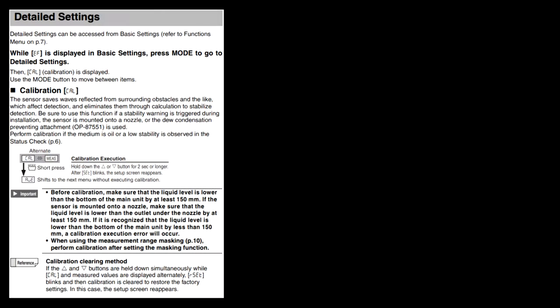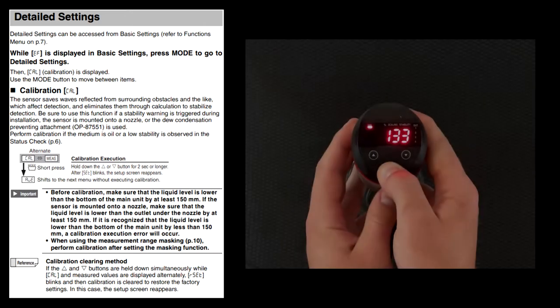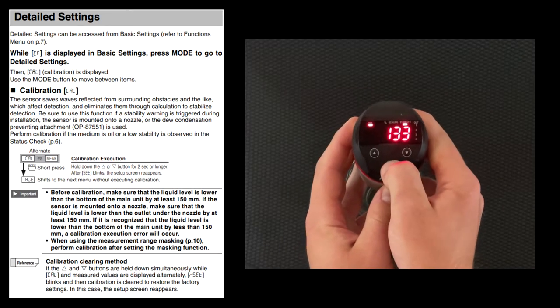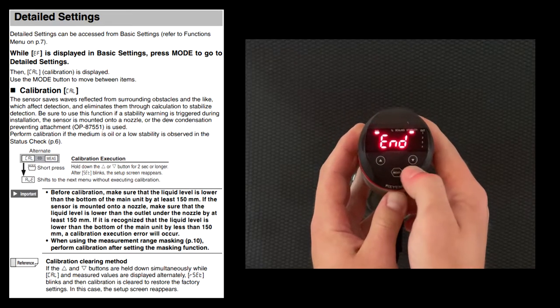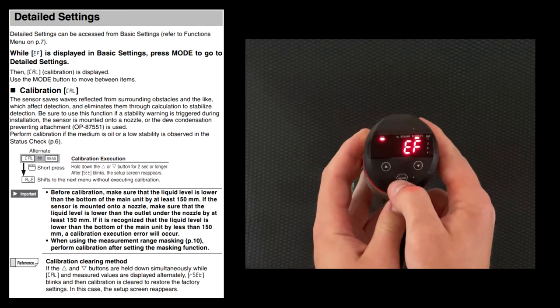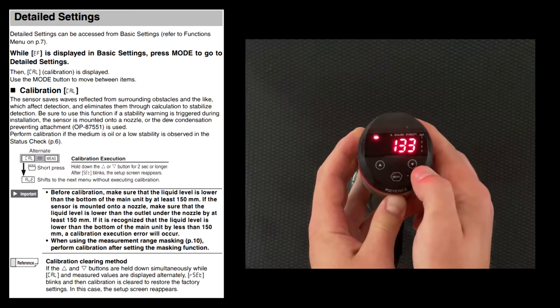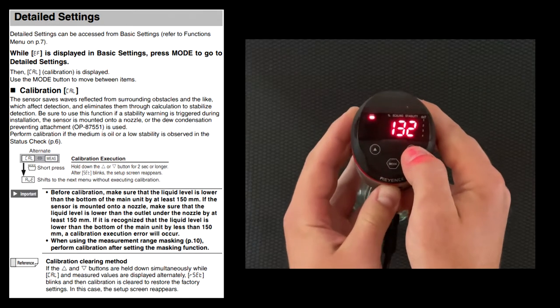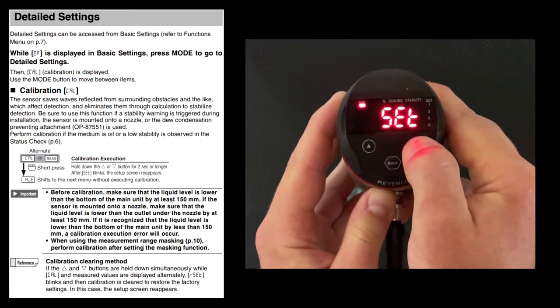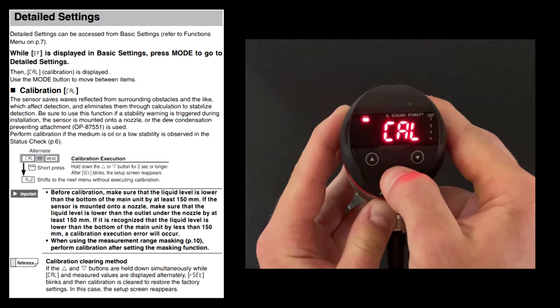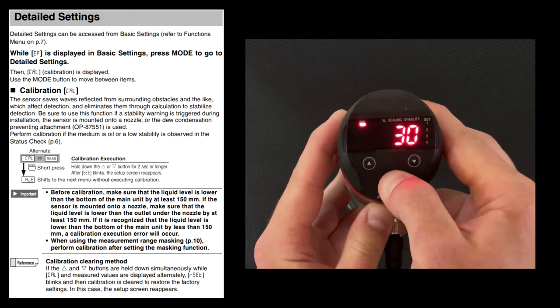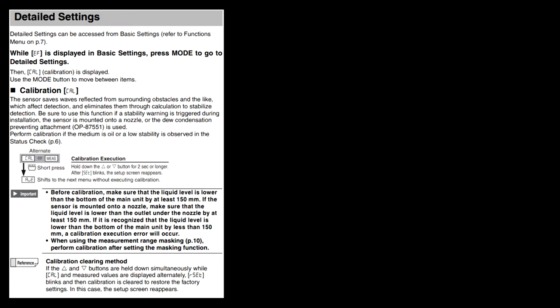Once your initial settings are entered, it's time to calibrate the FL to the liquid. Start by holding Mode to enter the Basic Settings menu. Tap Mode to cycle through all the different menu options. When you see End, use the arrow key to cycle to EF or Extended Functions. Cal will be the first menu option you see. Hold the down arrow key once 150 millimeters of the probe is free of the liquid. Set will flash, indicating a proper calibration has been done, and you can hold Mode to go back into the main display screen.